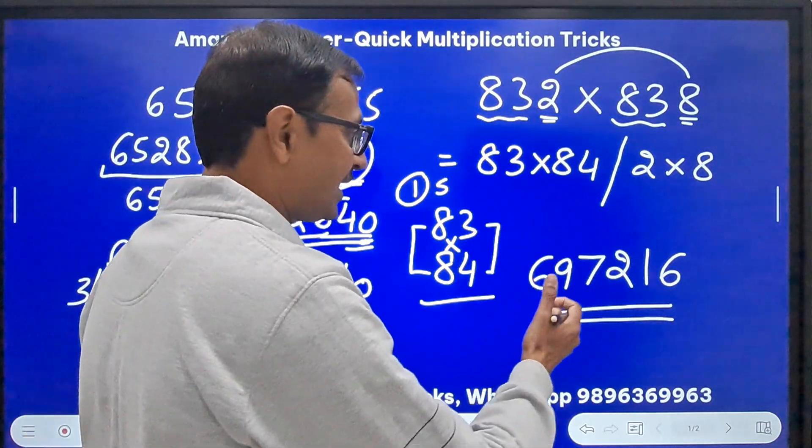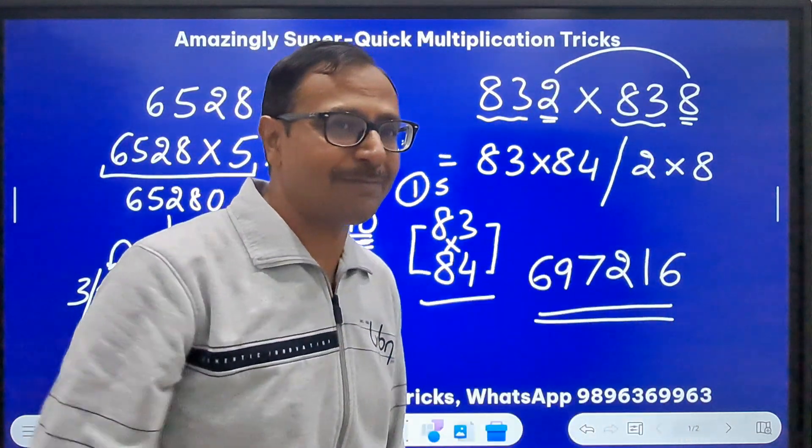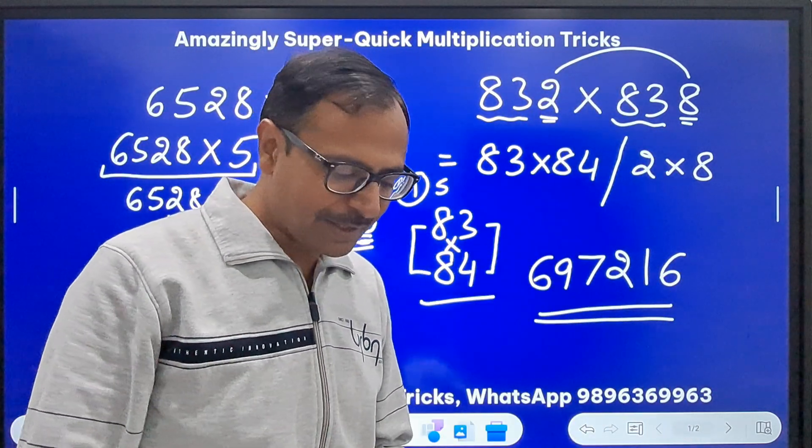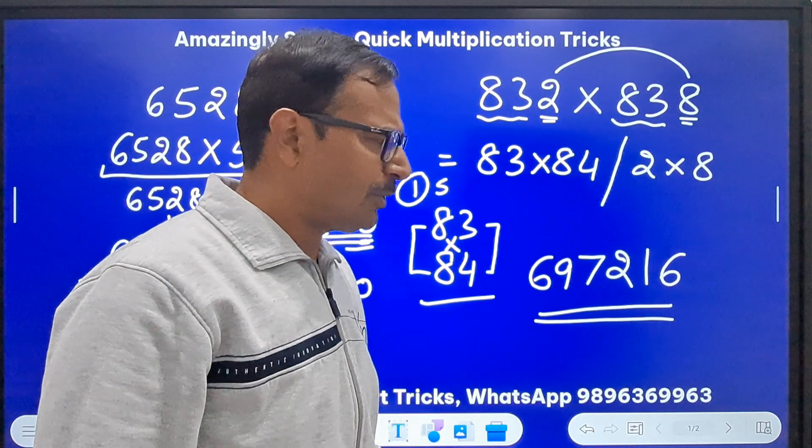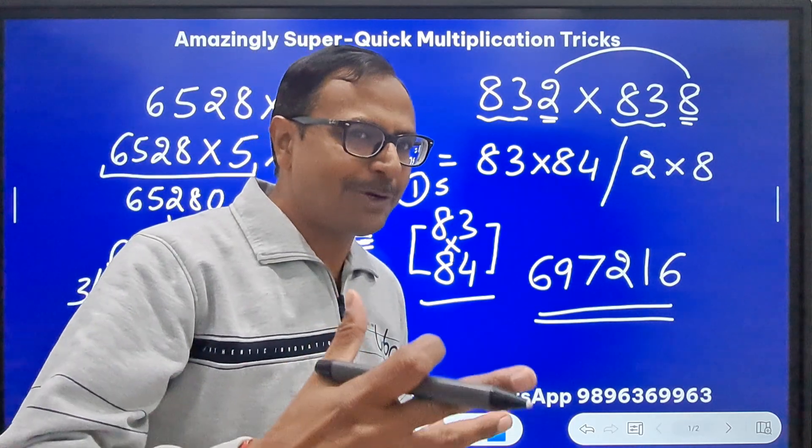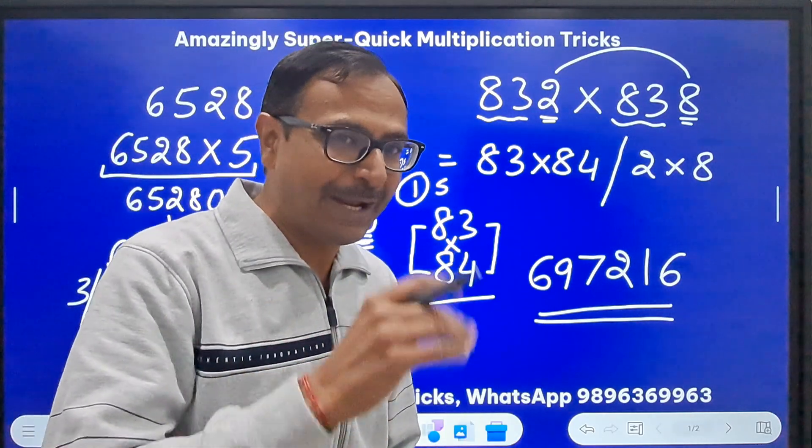Now what do you have to do? Pick up the calculators and check. 697216, is it the product of these two three-digit numbers? Again you are going to appreciate this. So comment here whether you are liking these or not.